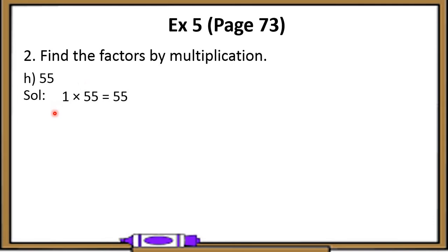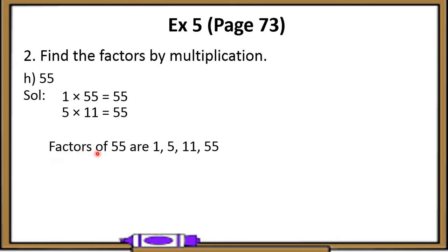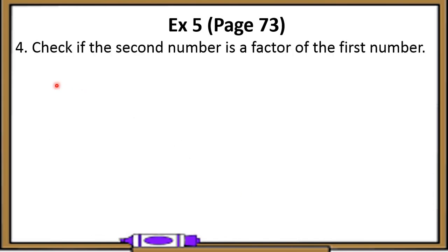So the multiplication fact is 5 multiplied by 11 is equal to 55. That means 5 and 11 are both factors of 55. If we check 6, 7, 8 — all these numbers will leave a remainder when dividing 55, so they are not factors. So the factors of 55 are 1, 5, 11, and 55.